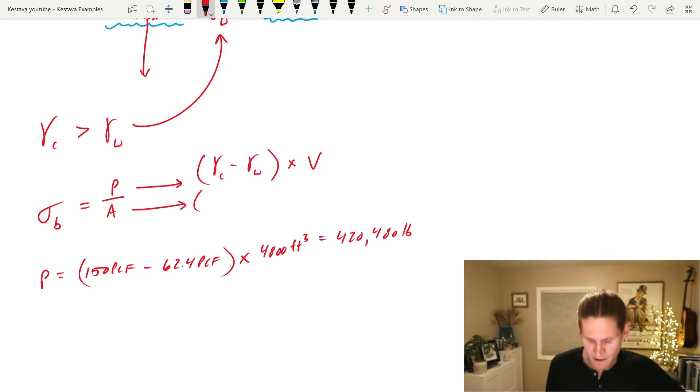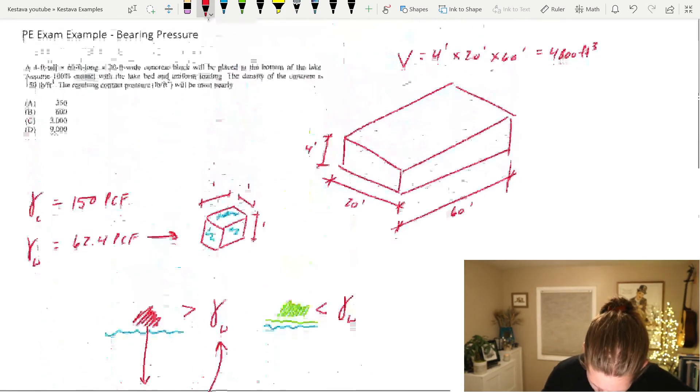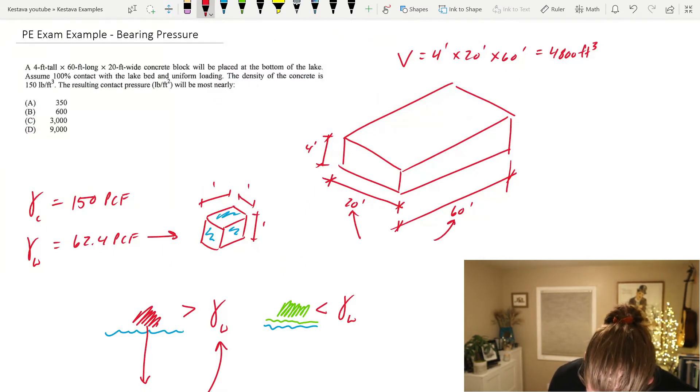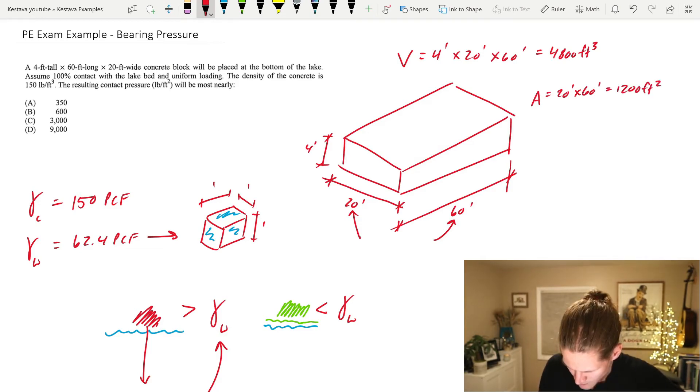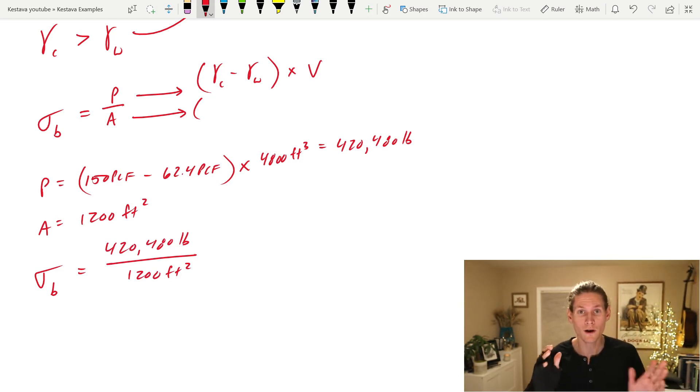Next, we need area. Area, and this is the surface area that's in contact of your concrete mass with the lake bed. That is going to be this dimension and this dimension. The area equals 20 feet times 60 feet, which equals 1,200 square feet. Let's bring that info back down. And now your total bearing pressure is equal to P over A. And we know we're in the right track, at least for an indicator based on the units that we have left over, which is pounds on top and a surface area of feet squared on the bottom. That's an area and that's a force on top. I think we're looking good.